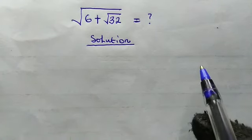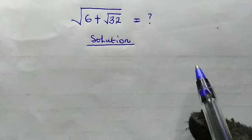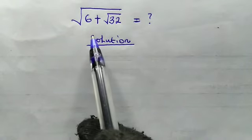Hello good viewers, welcome back once again. Today we're going to find the square root of a surd expression. We have the square root of 6 plus root 32.